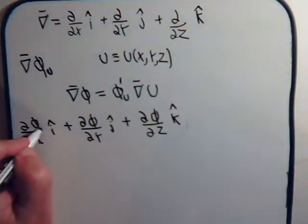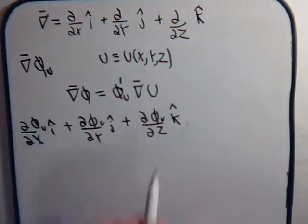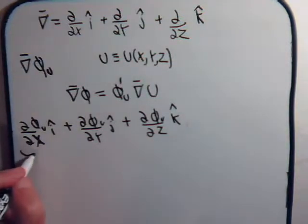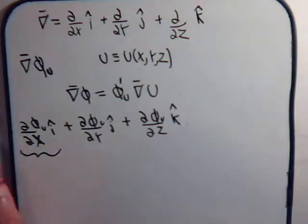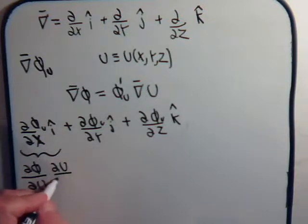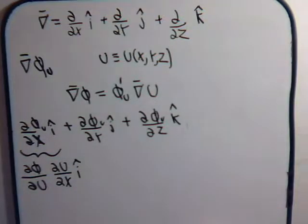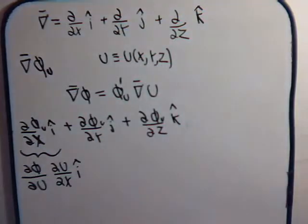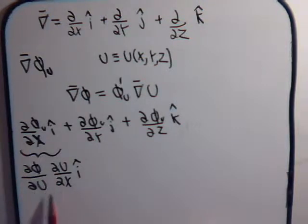Remember, phi itself is a function of u, and u is some function of x, y, and z. So for the partial of phi with respect to x, we can use the chain rule and write this as the partial of phi with respect to u times the partial of u with respect to x — that will be the i component of the gradient vector.